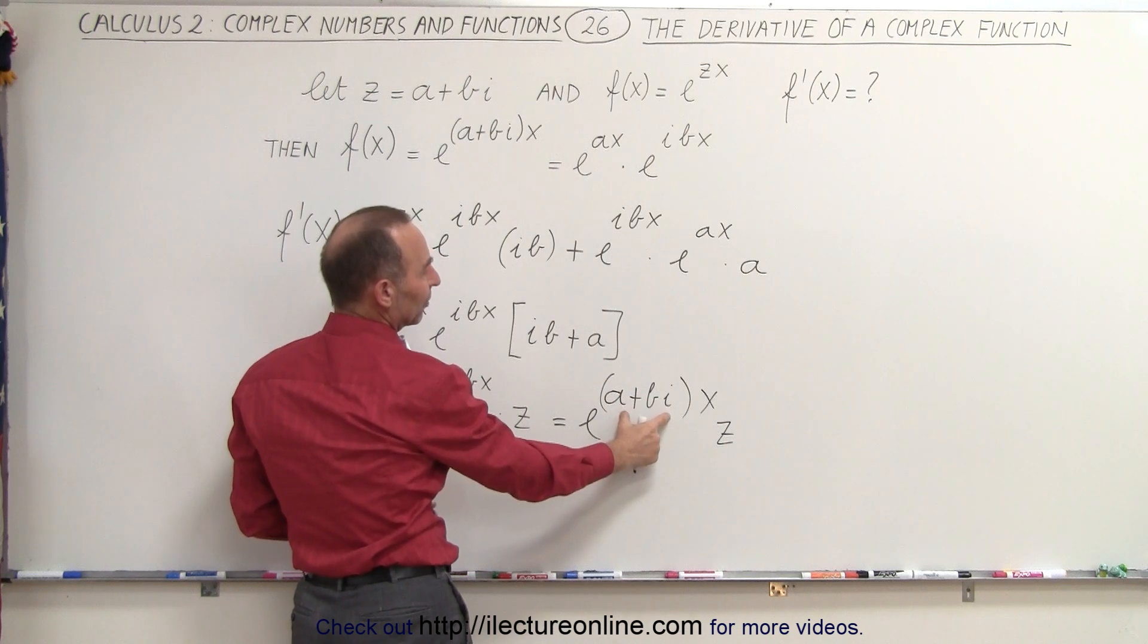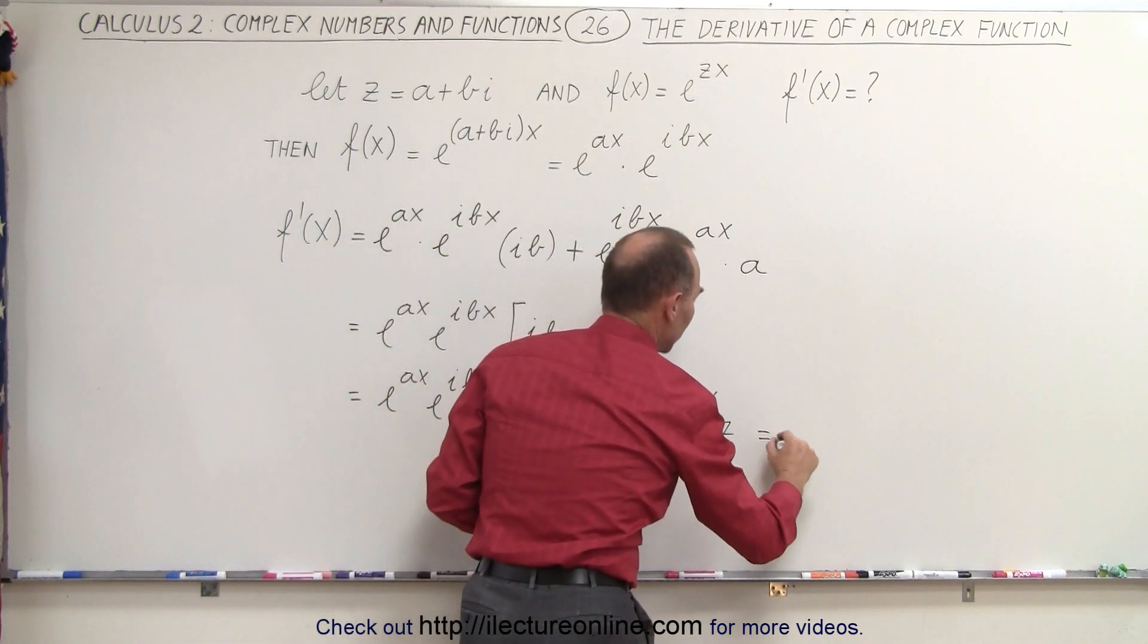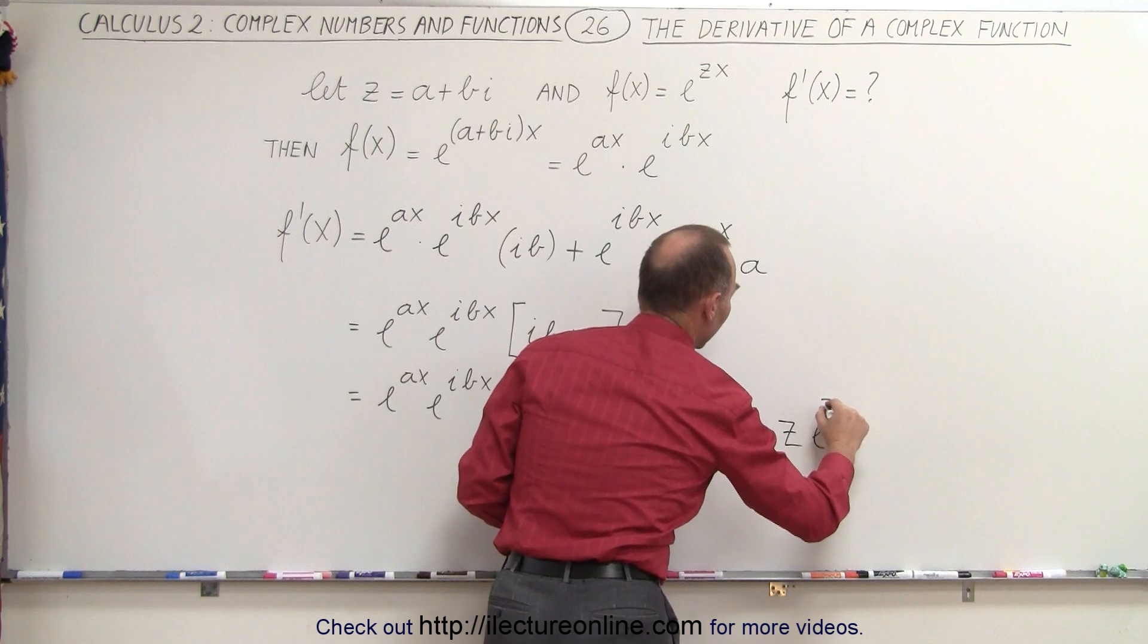And of course, you realize that a plus bi is equal to z. So this can finally be written as z times e to the zx.